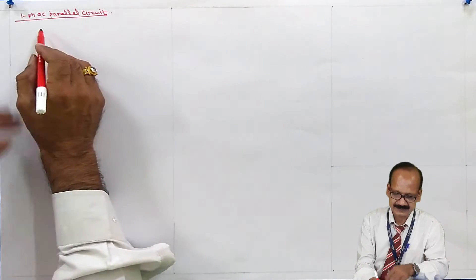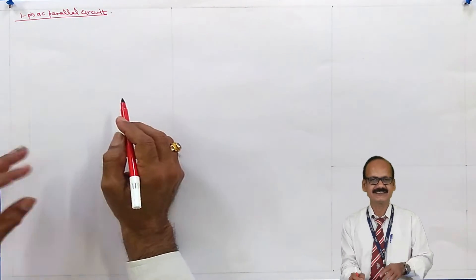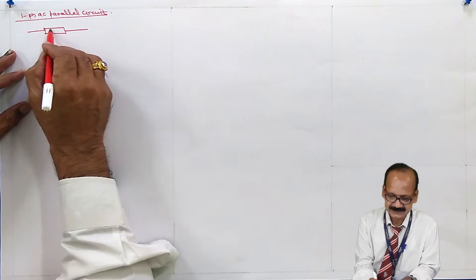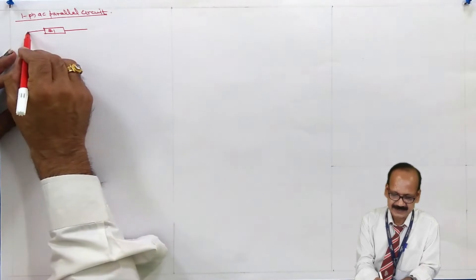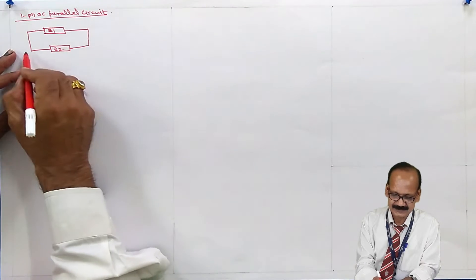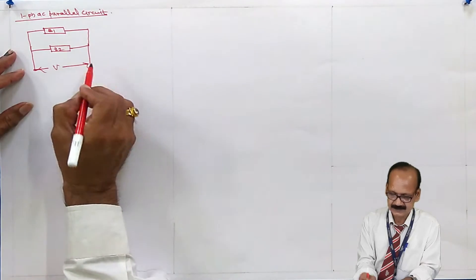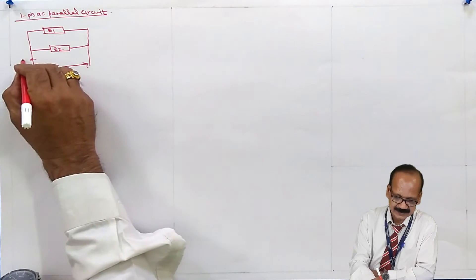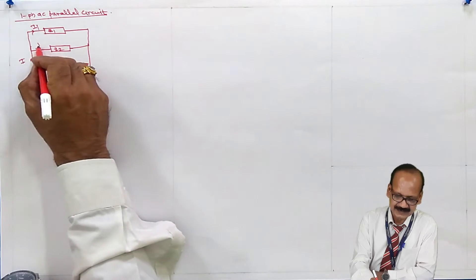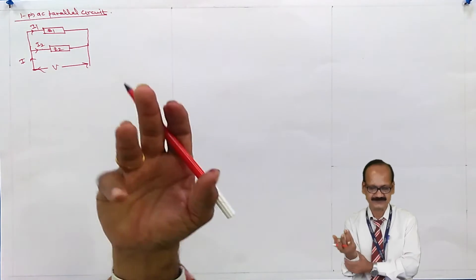So let us consider two impedances. In electrical engineering, impedance is denoted by a rectangular box. Say this is Z1 and another is Z2. Let us connect these two impedances in parallel with a supply voltage. The total current is I, the current through Z1 is I1, and the current through Z2 is I2. Z1 and Z2 may be either inductive or capacitive.